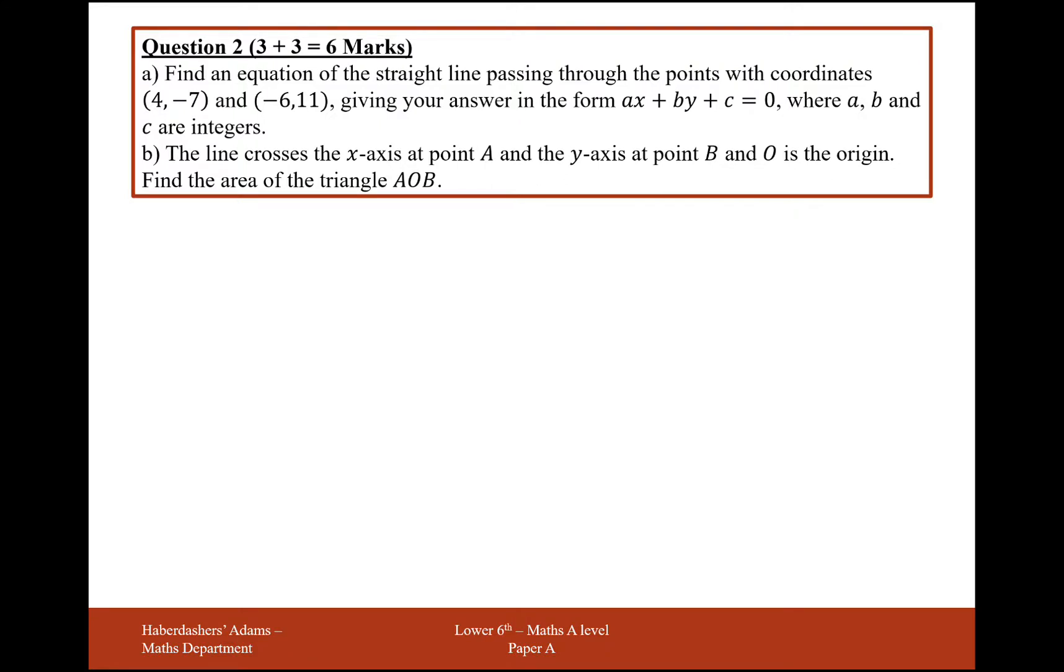Question 2 is find an equation of a straight line passing through the coordinates (4, -7) and (-6, 11), giving your answer in the form ax + by + c = 0, where a, b, c are integers.